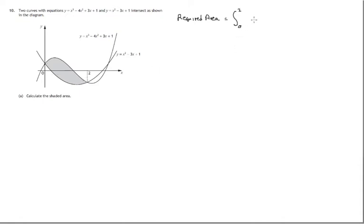The top curve is the cubic one with formula x³ - 4x² + 3x + 1, and we're subtracting the bottom curve formula, which is x² - 3x + 1. Remember to include the dx to show the extent of what you're integrating. To emphasize, that's the top curve and that's the bottom curve, the order we subtract them in.